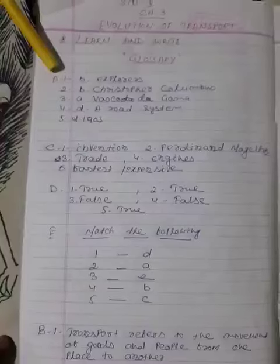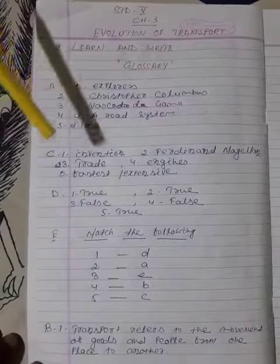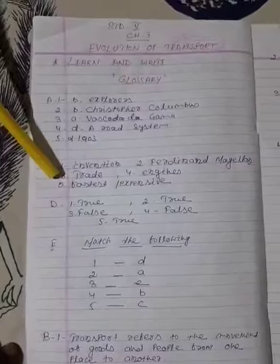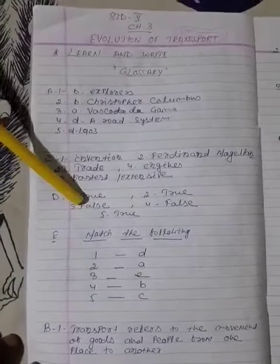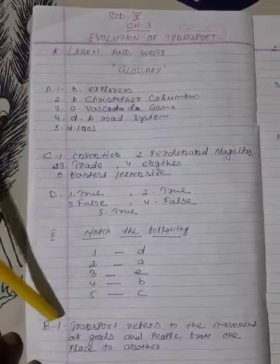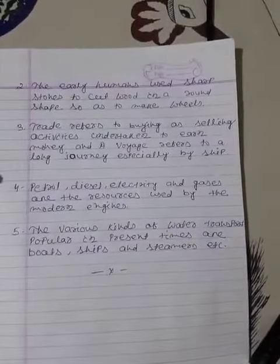Here, number one: tick the correct option. Then C number: fill in the blanks. Then D number: true or false. Then match the following. Lastly, B number: questions 1, 2, 3, 4, and 5.